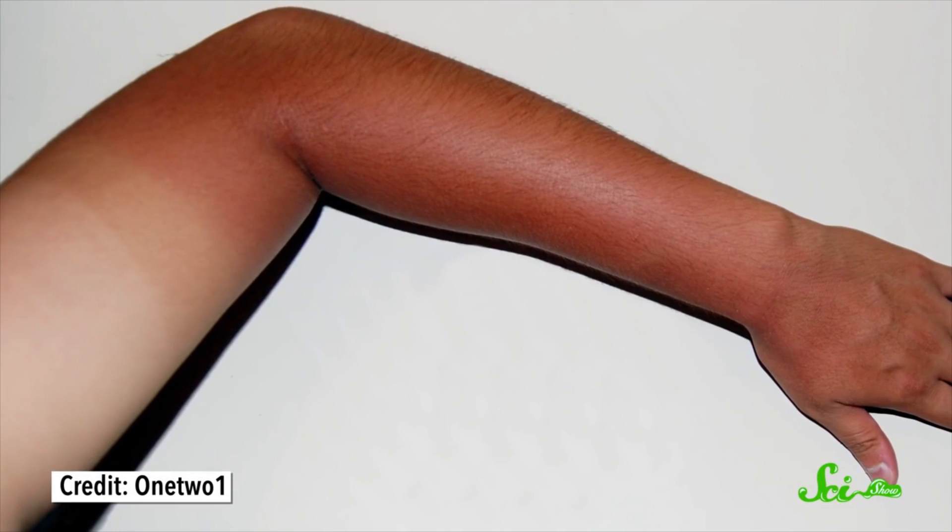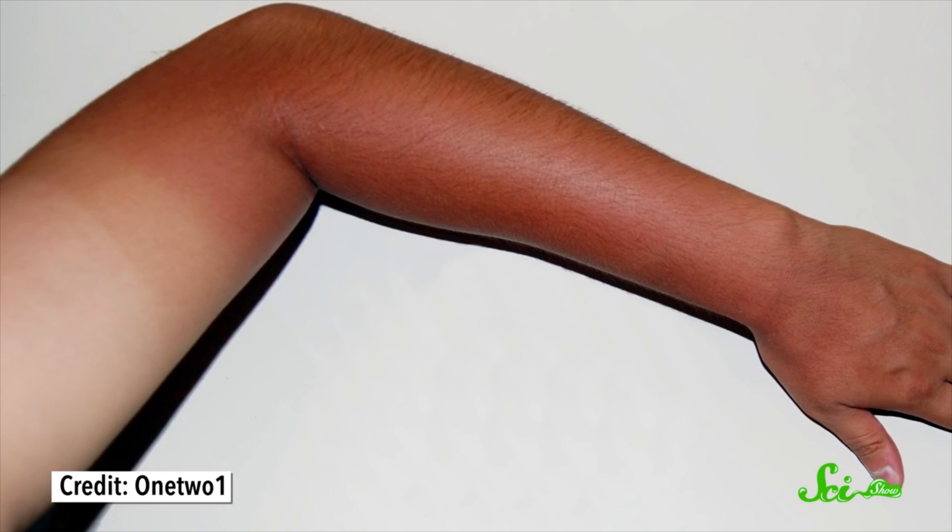But melanin's real job is to absorb UV radiation before it can damage too many of your skin cells. Basically, when you tan, your body is realizing that more sun exposure might be coming, and it tries to protect you. But sometimes that's not enough.